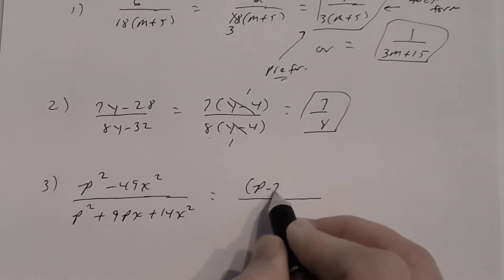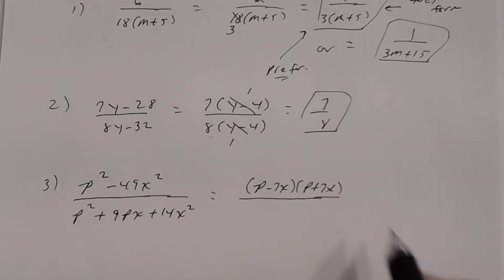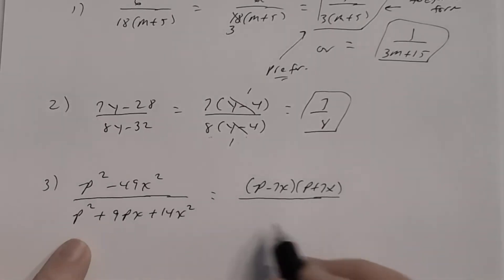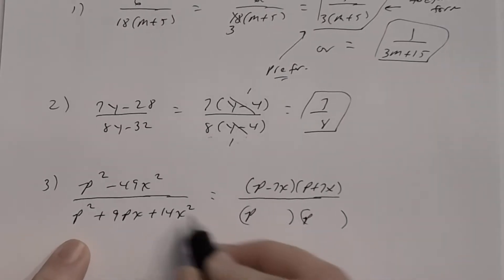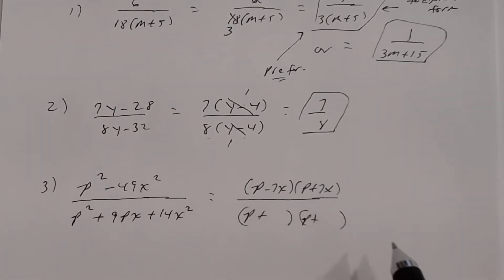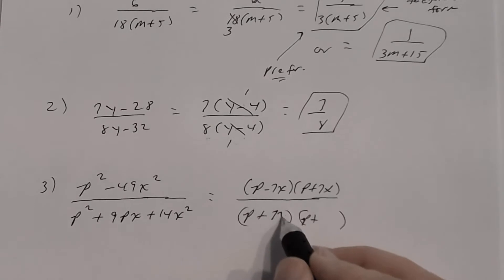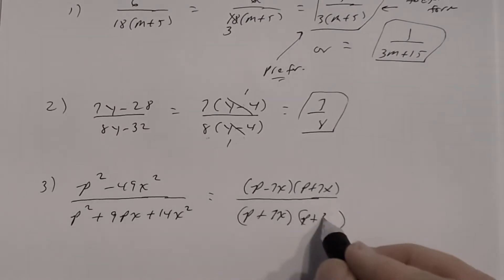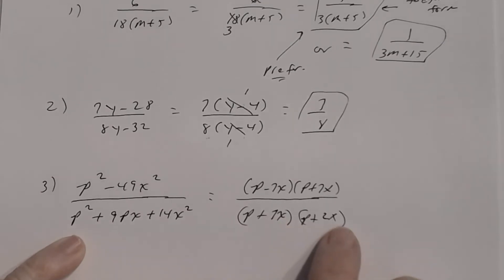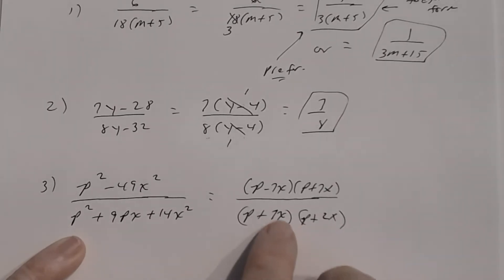The numerator factors as (p − 7x)(p + 7x). The denominator is a trinomial with GCF of 1 and two variables, so go directly to two binomials: p times p, last sign is positive so both signs are positive. For 14x², try 7x and 2x. Double-check: p² + 7x·2x = 14x², outer 2xp + inner 7xp = 9xp. ✓